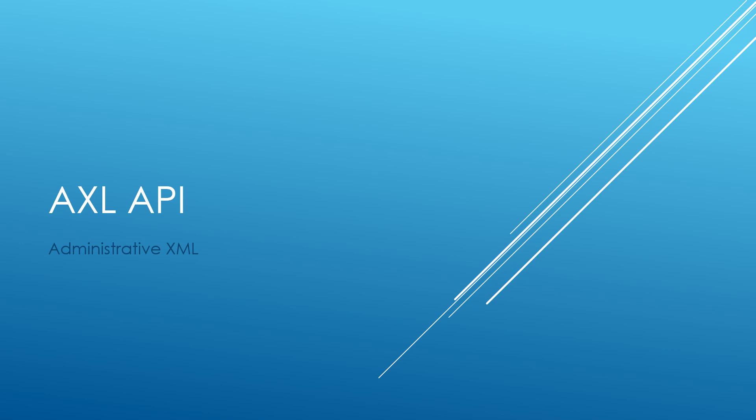So what is AXL API? Let's first understand the full form. AXL stands for Administrative XML — XML of course being Extensible Markup Language — and API stands for Application Programming Interface. It is one of the provisioning interfaces provided by Cisco Unified Communications Manager.